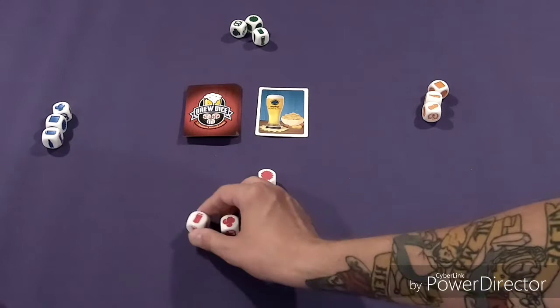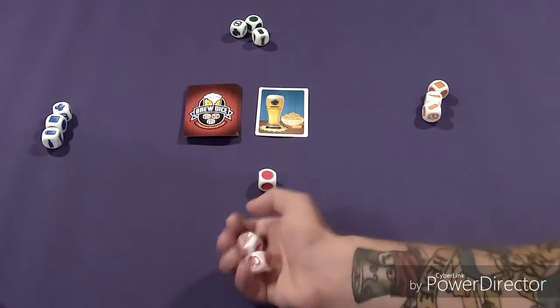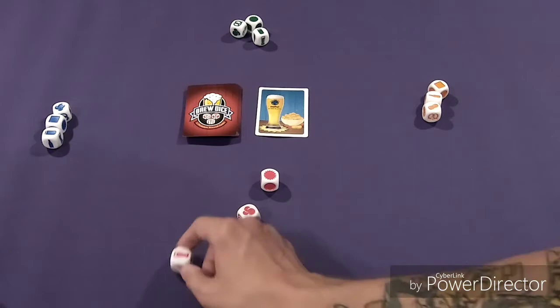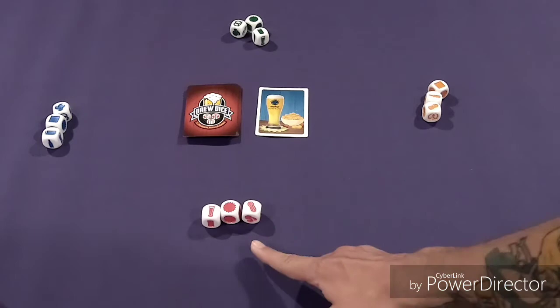I got a star coaster, I'd set that aside. I got a can and I got popcorn, so those are not what I was looking for. I'd roll these: bottle, pretzel, not what I'm looking for. Glass, popcorn, popcorn, peanuts.